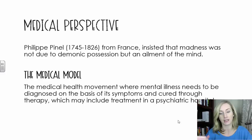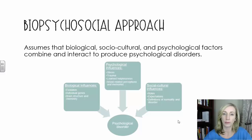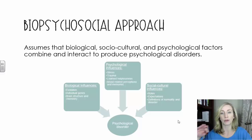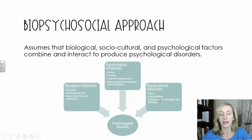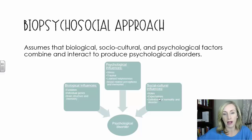The biopsychosocial approach assumes that three parts — biological, social-cultural, and psychological factors — combine and interact to produce a psychological disorder. This includes the roles and expectations in your culture, the stress and trauma you may have dealt with in the past that psychologically impacts you, as well as your genetic predisposition and biological influences. All of these interact and influence each other.